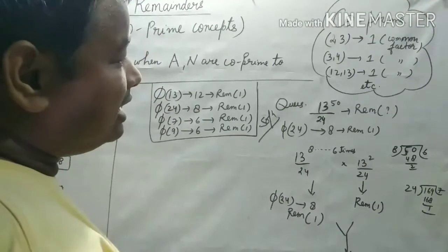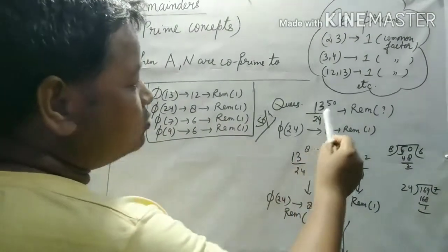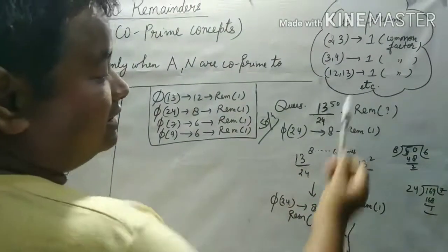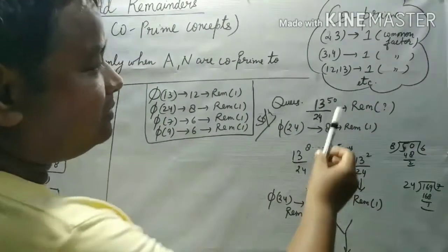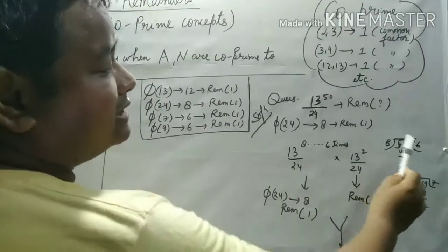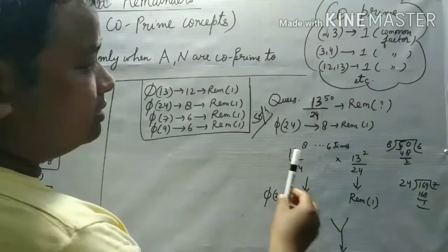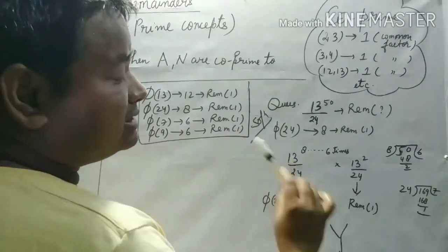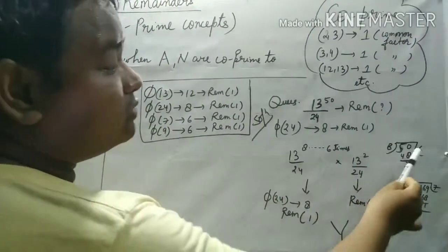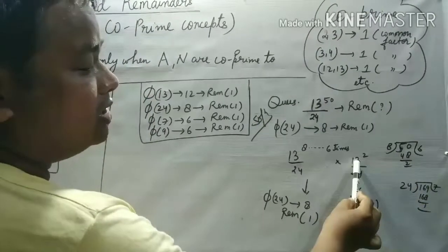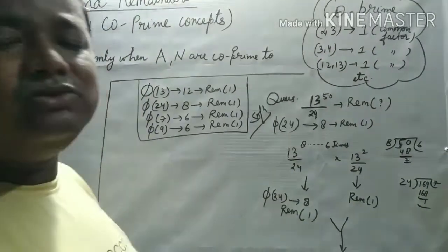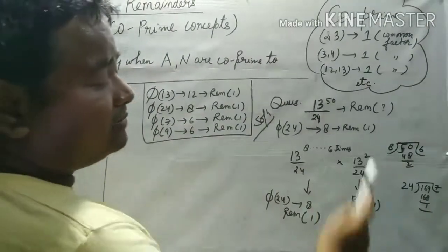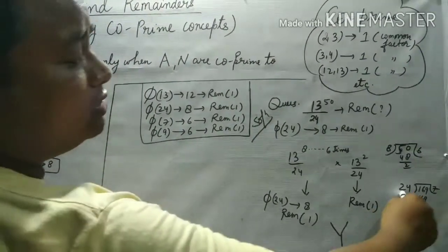But the question is that it is not made up of 8, but we will make 8. How we will make it? The way we will do: divide it. So that means 13 power is 6 times, and then we will divide it. That means 13² is 169, so when you divide it, remember 1 because 24 is 168.